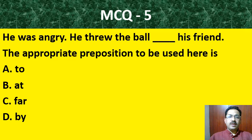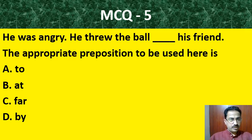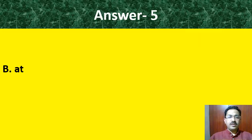MCQ question number 5: 'He was angry. He threw the ball — dash — his friend.' The correct preposition to be used here is: to, at, for, or by. The correct answer is 'at' — he threw the ball at his friend.